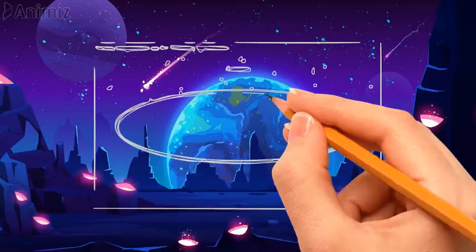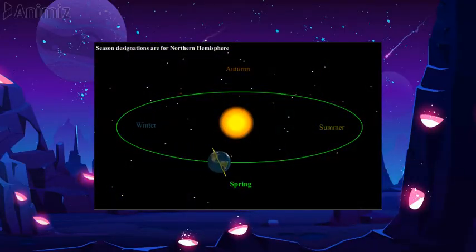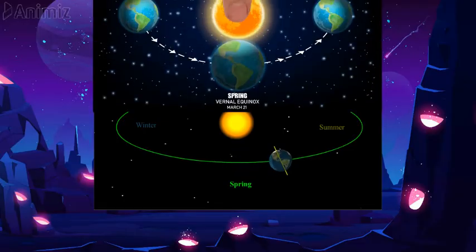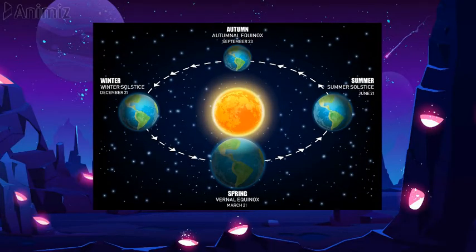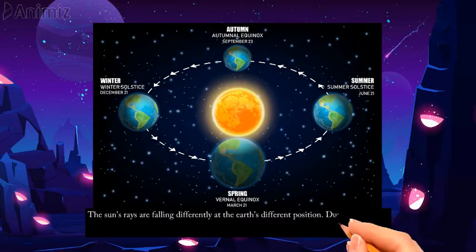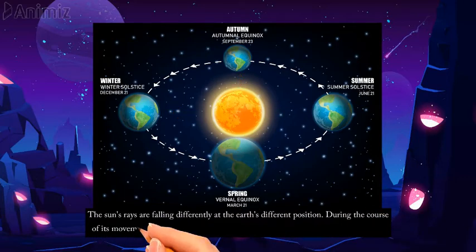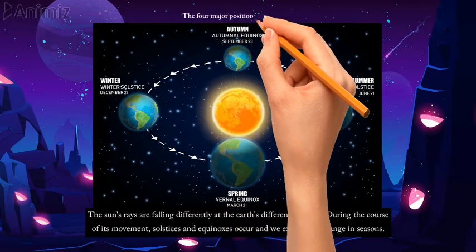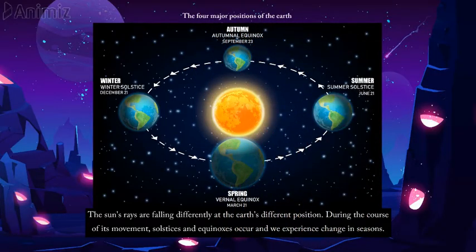As we know, the earth keeps moving around the sun and changing its position. Here the important thing we have to notice is that the sun rays are falling differently at the earth's different positions during the course of its movement. Solstices and equinoxes occur and we experience change in seasons. We are showing you the four major positions of the earth when solstices and equinoxes occur.